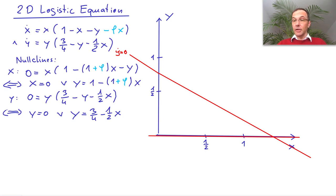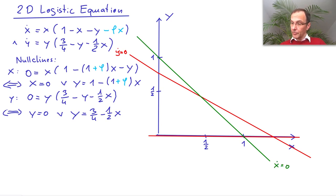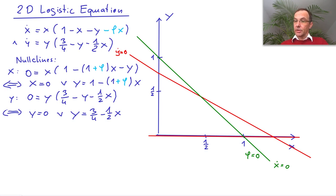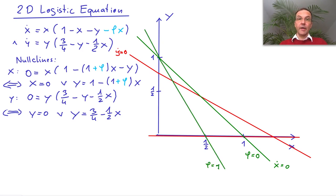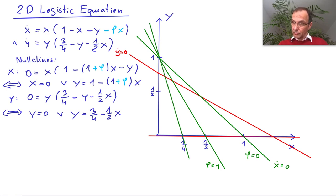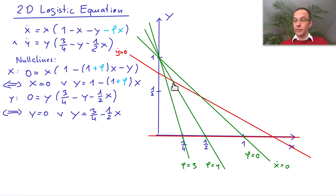I first draw in the original null cline for φ equals 0. Then for φ equals 1, the slope would be twice as steep — rather than 1, you have 1 plus 1 equals 2, so the null cline looks like this. And for φ equals 3, it would go through 1/4. We see that in this case the fixed point in the center — the stable balance between the two species — moves around. But no matter how much fishing you do, you can never drive the x population to extinction.